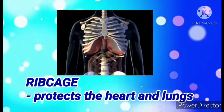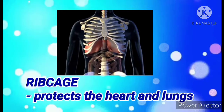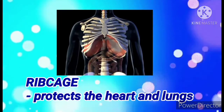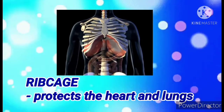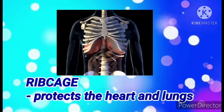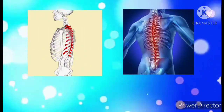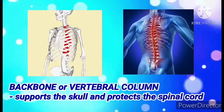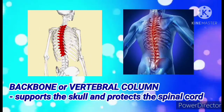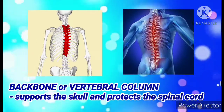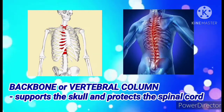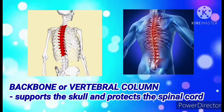Next, we have the rib cage. It is composed of ribs and a sternum, and it protects the heart and lungs. We also have the backbone or the vertebral column, which supports the skull and protects our spinal cord.